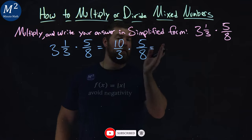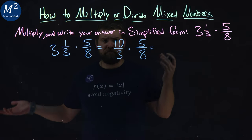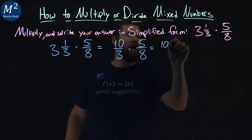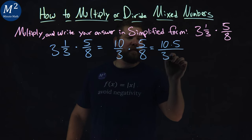Now, from there, we know we just multiply across the numerator and denominator. Not too bad. Ten times five over three times eight.